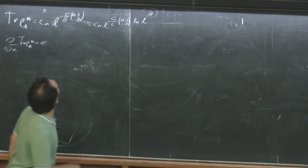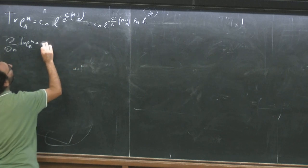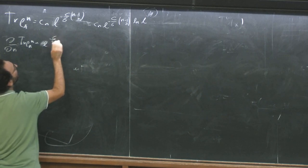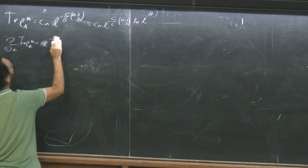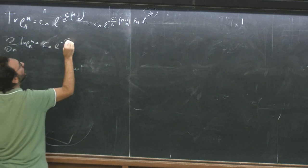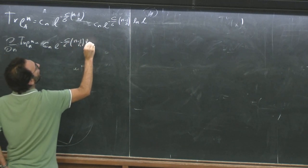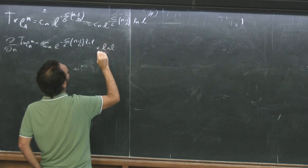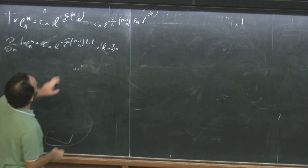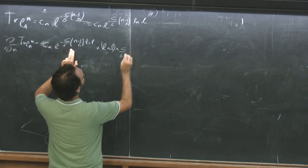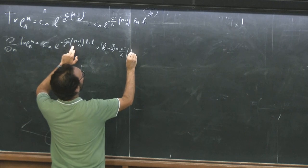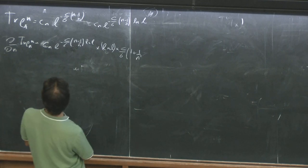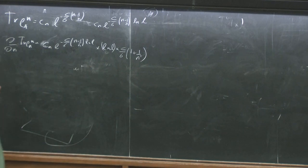The entanglement entropy will be minus the derivative with respect to n of Tr(ρ_A^n), evaluated at n=1. Let's do the calculation. Tr(ρ_A^n) equals c_n × exp(−(c/6)(n − 1/n) log L). Taking the derivative is easy. For n equal to 1, c_n equals 1 and the exponential equals 1, so we have c/3 × log L plus the derivative of c_n evaluated at 1, which I denote c₁′.